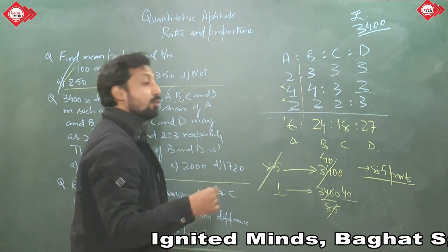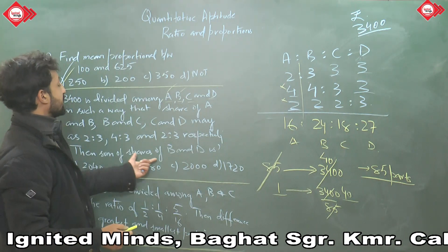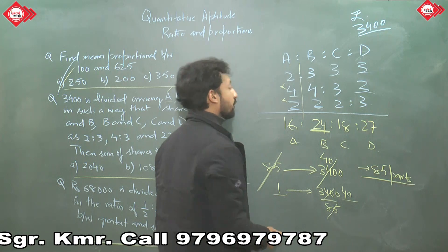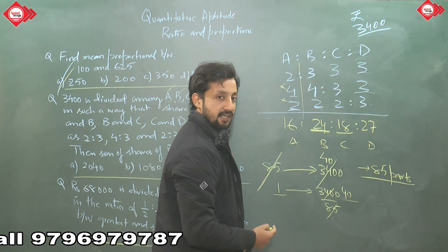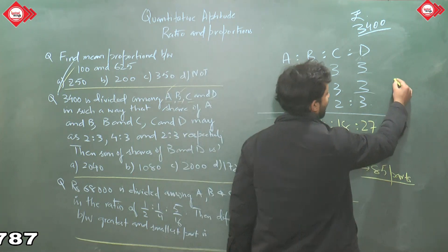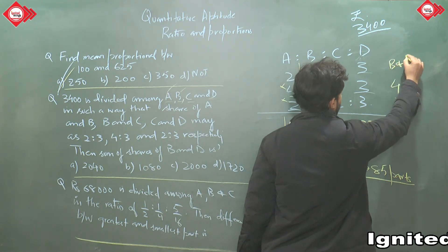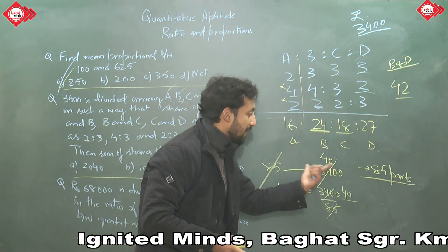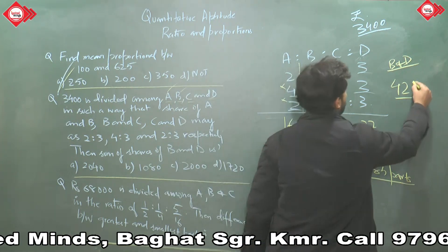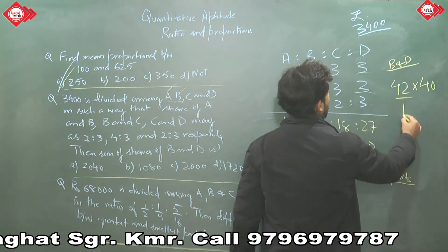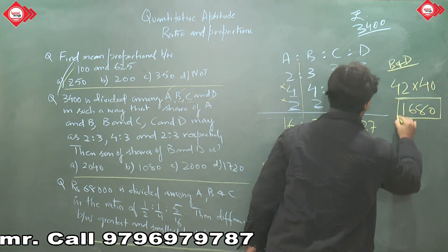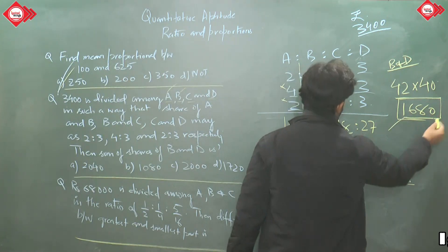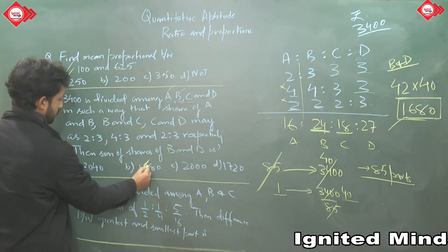One part represents 40 rupees. The question asks for the sum of shares of B and D. B has 24 parts and D has 27 parts, giving 24 + 27 = 51 parts — wait, B is 24 and D is 27? Actually B and D: B's parts are 24, D's parts are 27. But wait — re-checking: B=24, D=27, total = 51? No — the instructor says B=24, C=18 giving 42 for B and D... let me preserve the spoken content: B has 24 parts and D has 27 parts... the answer spoken is 42 parts × 40 = 1680.